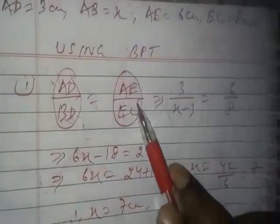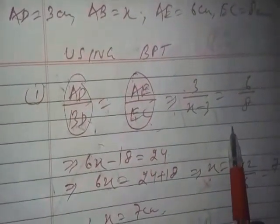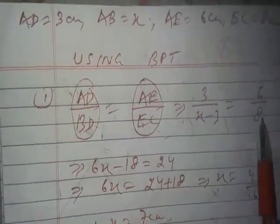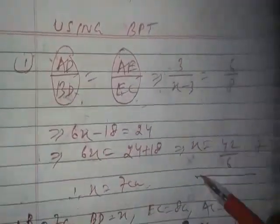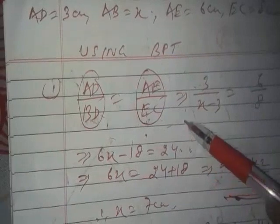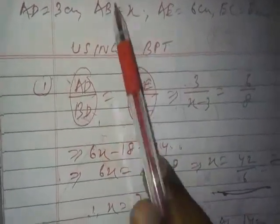AE is 6 cm and EC is 8 cm. By cross multiplication we get 6X minus 18 equals 24, and further simplification gives X equals 7. Earlier we used the corollary of BPT; here we used BPT directly. Note that whenever we need to find a segment, we express it as a difference: BD equals AB minus AD, which is X minus 3.